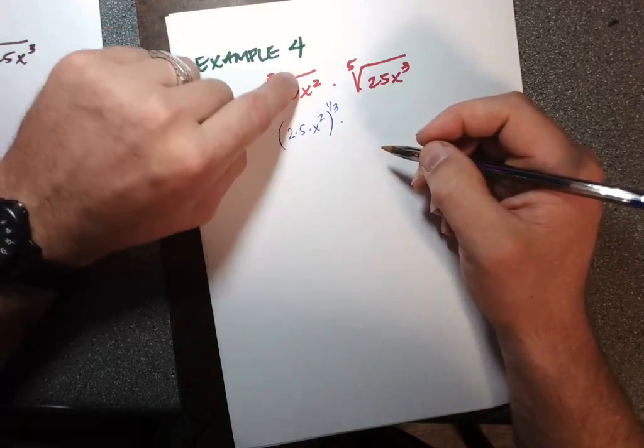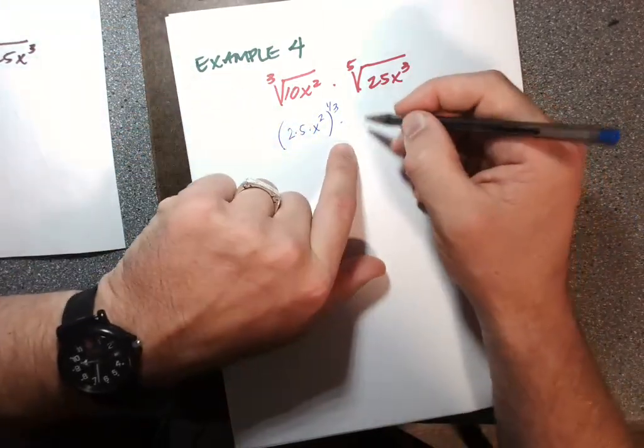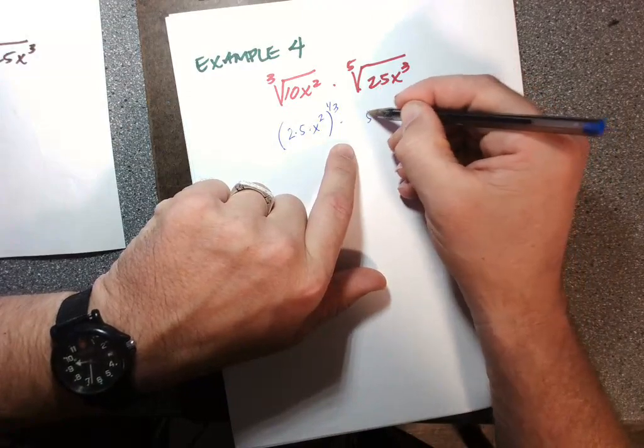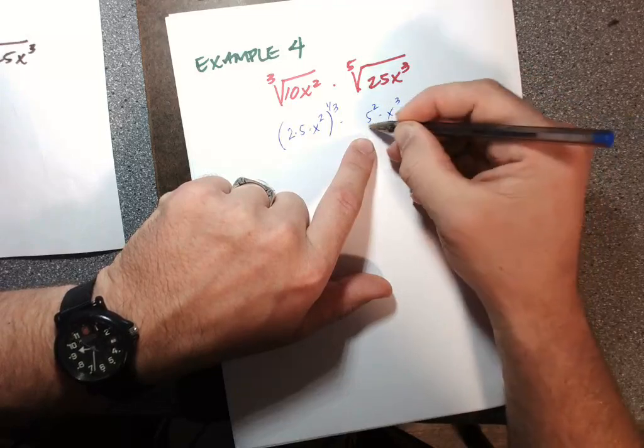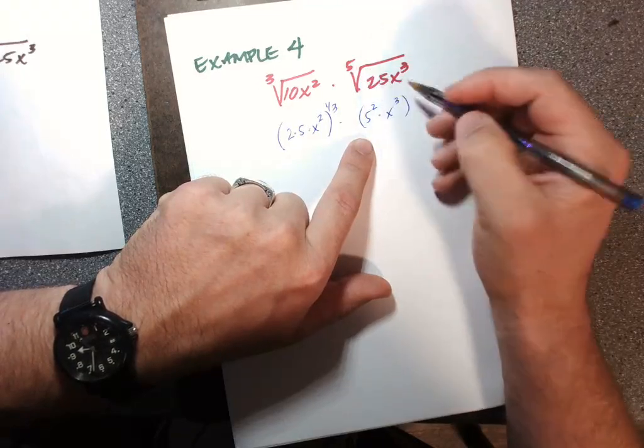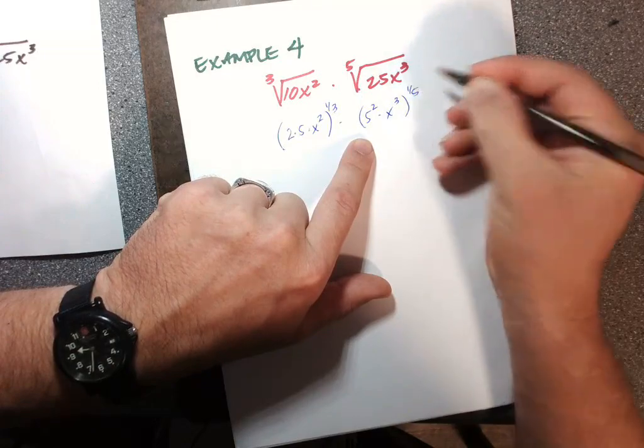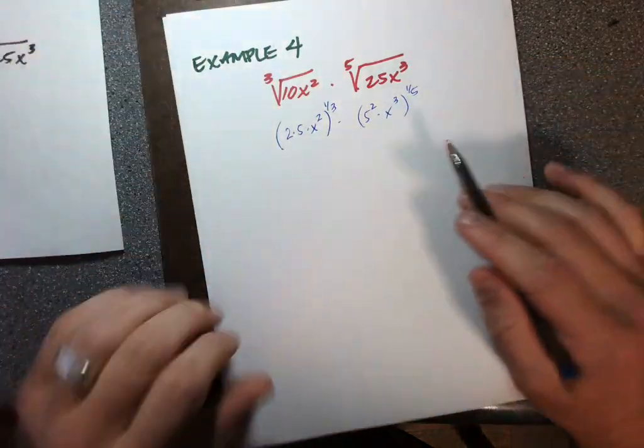At least, same thing here. This is 25: five squared, x cubed. And then the rule with the fifth root, it would be equivalent to the one-fifth power.